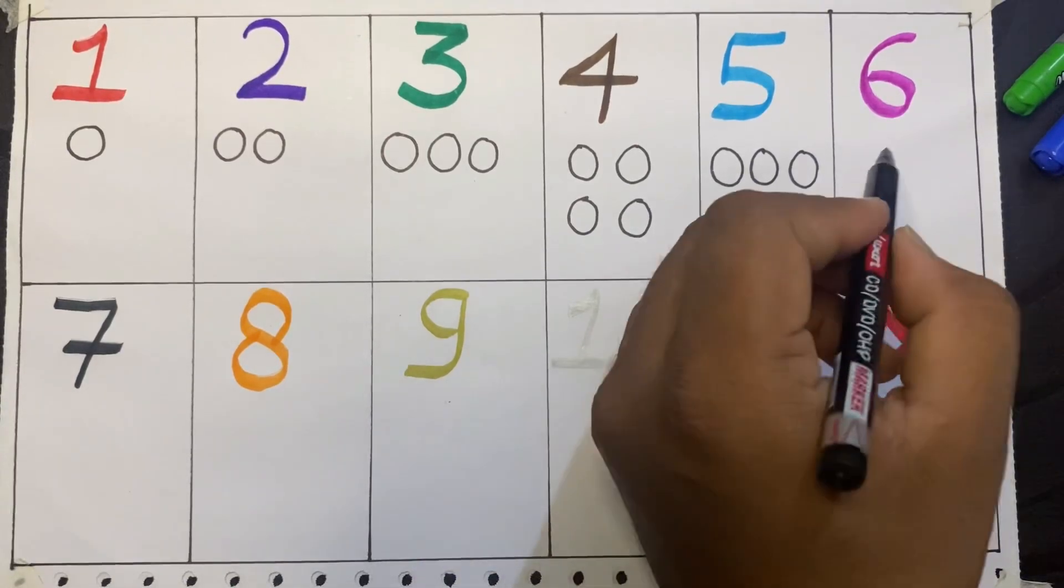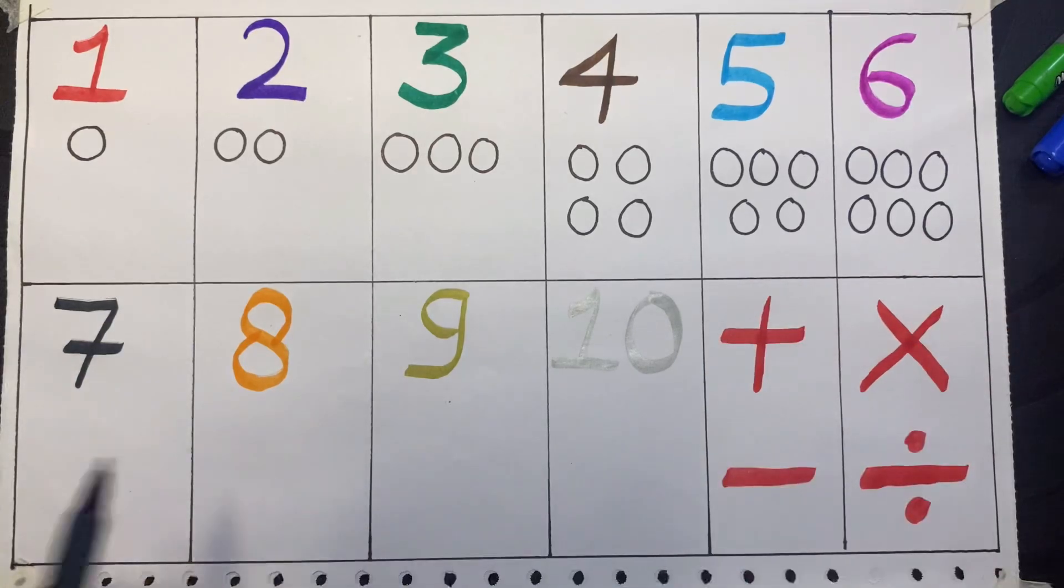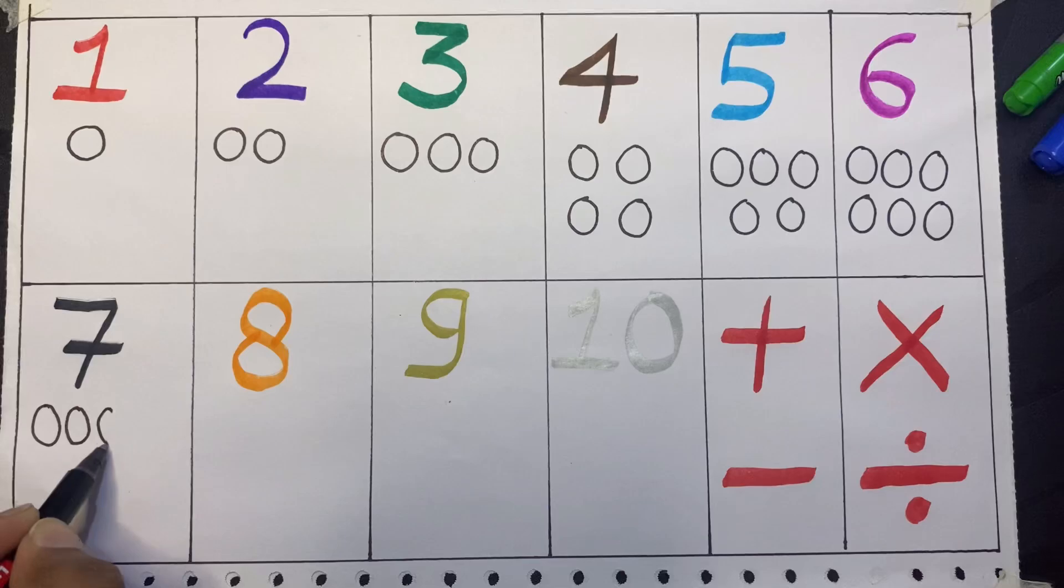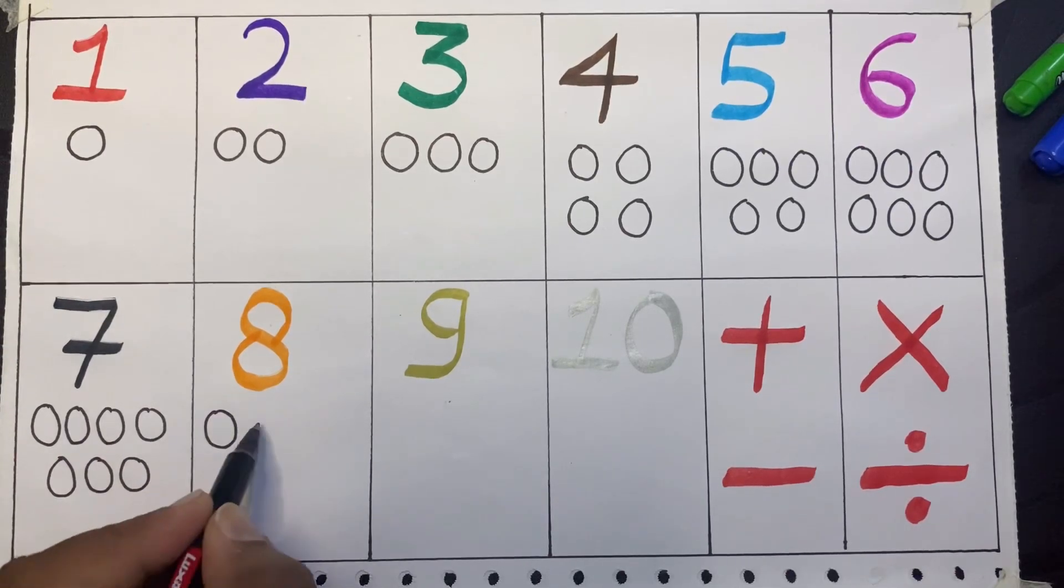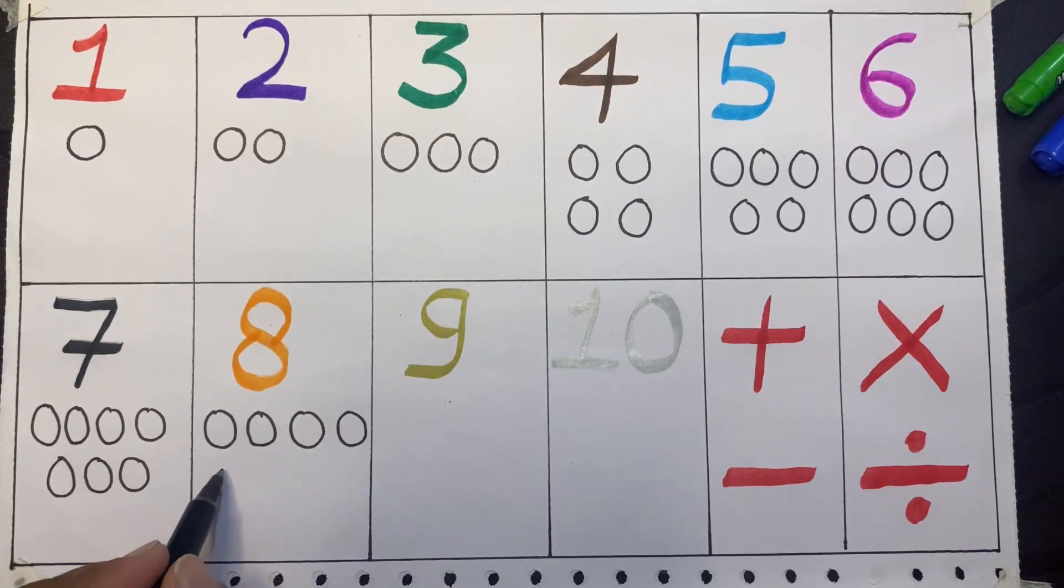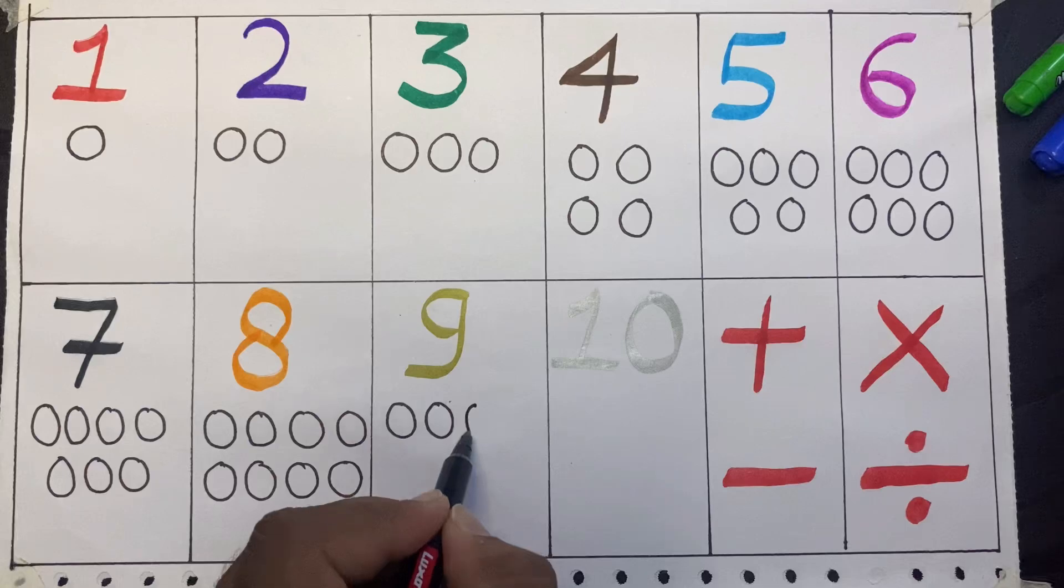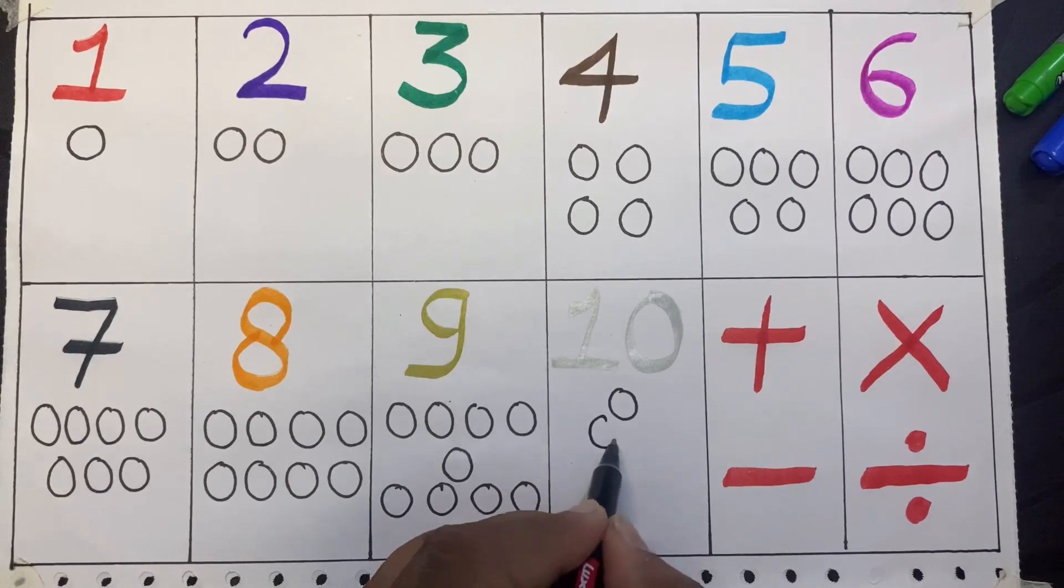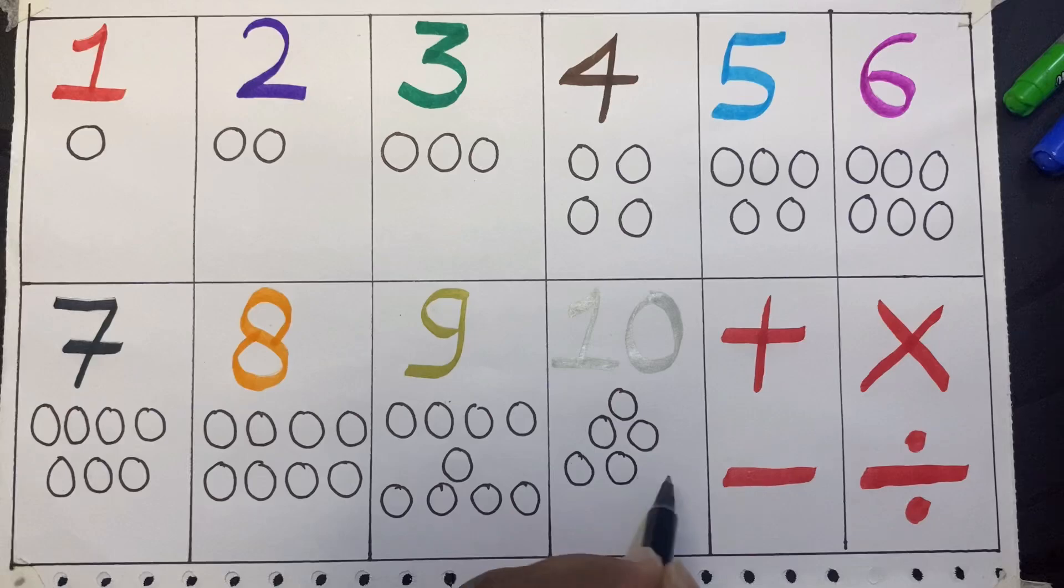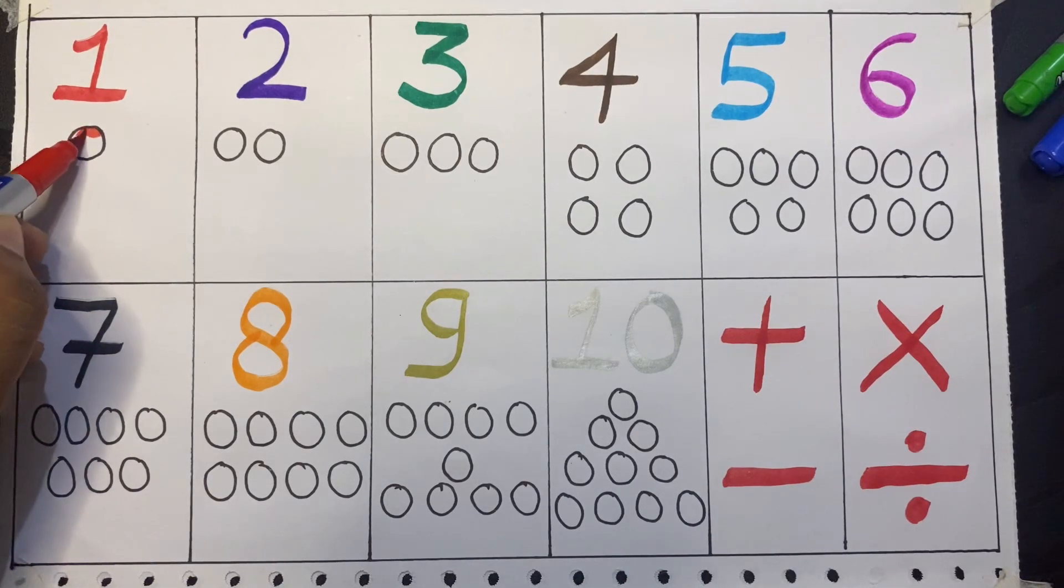1, 2, 3, 4, 5, 6. 1, 2, 3, 4, 5, 6, 7. 1, 2, 3, 4, 5, 6, 7, 8. 1, 2, 3, 4, 5, 6, 7, 8, 9, 10. Now let's count circles.